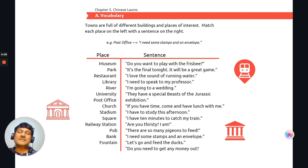Welcome back to our course. I take it that you have taken the time, paused the video and done the answers. And now I'm going to give you the corrections. So starting with the first one over here, museum. And it matches with, they have a special beast of the Jurassic exhibition. Okay. The next one is park. And park matches with, do you want to go and play with the frisbee? Okay. The next one is restaurant. And it is, if you have time, come out and have lunch with me. So it's an invitation.